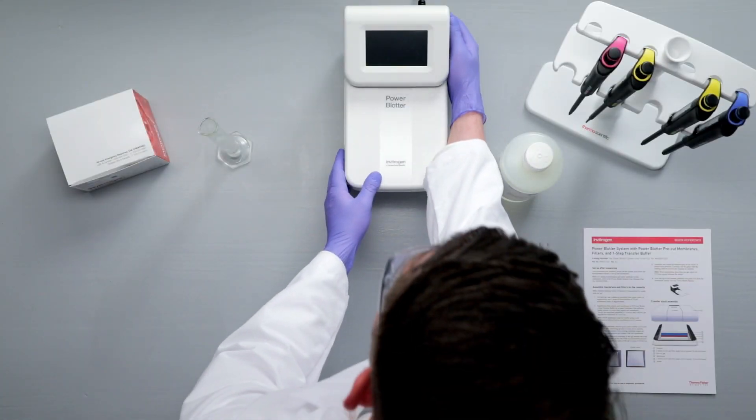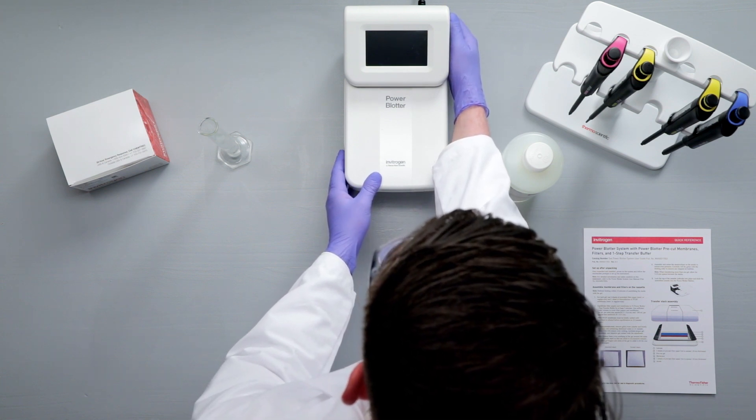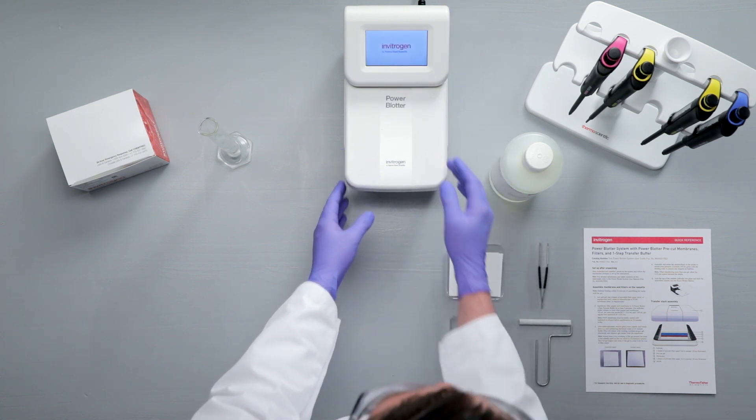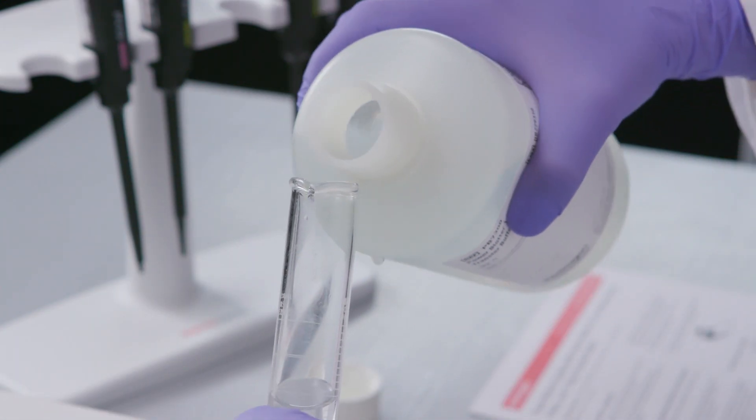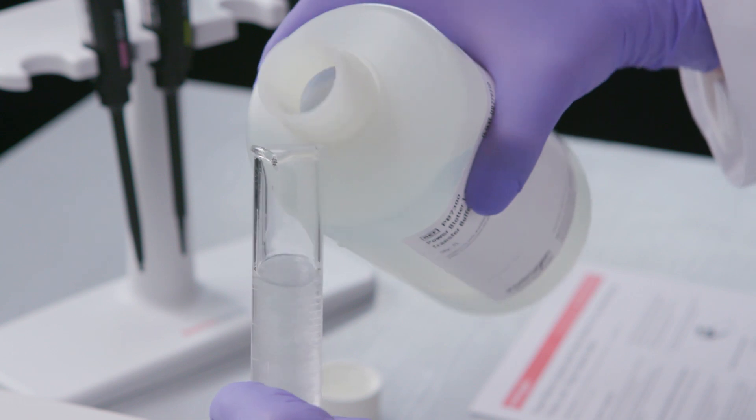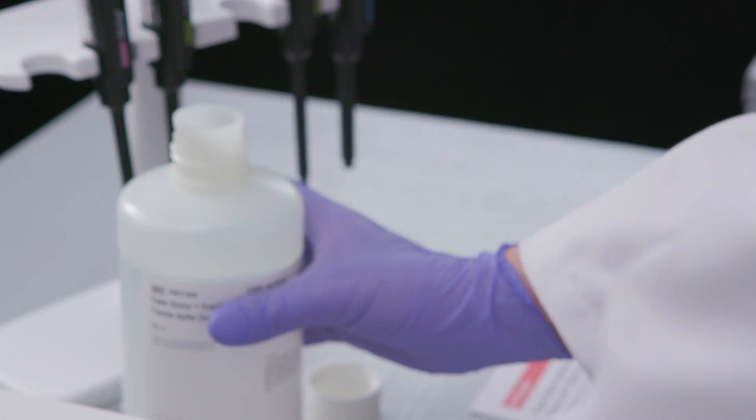To begin the transfer process, flip the power switch at the rear of the device to turn on the system. The Power Blotter One-Step Transfer Buffer comes in a 5x concentration. Before using, dilute to a 1x concentration using deionized water.